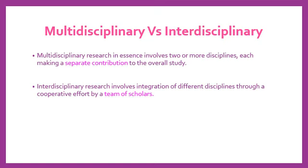In multi-disciplinary research, two or more disciplines each make a separate contribution to a study. For example, sociology contributes by examining gender roles — if you are a boy you act like a boy, if you are a girl you act like a girl. Psychology contributes by discussing how the mind frames gender as belonging to a specific category. These are separate contributions from each discipline.